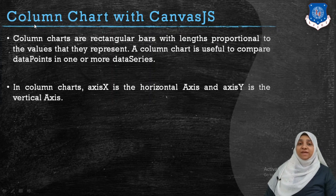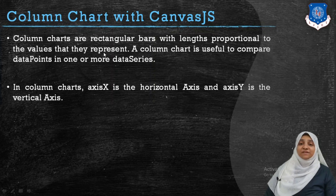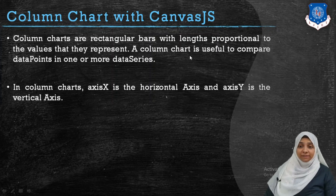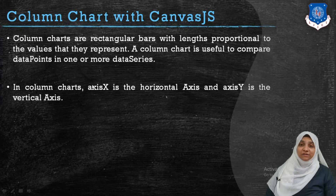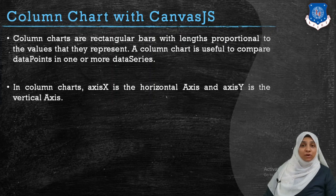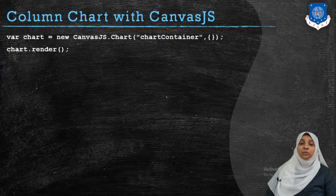The first example we will see is how to display a column chart with the CanvasJS library. A column chart is nothing but a rectangular bar with a length proportional to the value of data it is representing. A column chart is very useful to compare data points for one or more data series. We have two axes in a column chart: the x-axis, which is generally the horizontal one, and the y-axis, which is the vertical one.